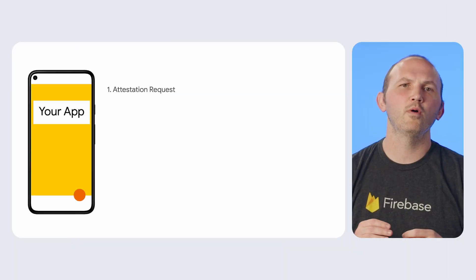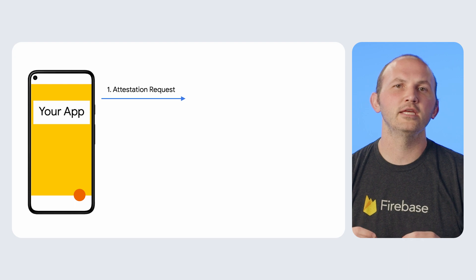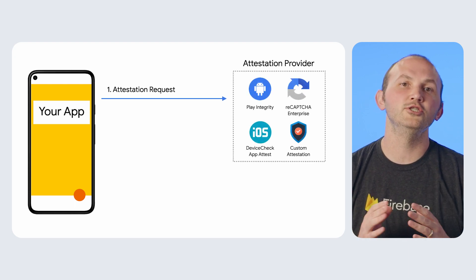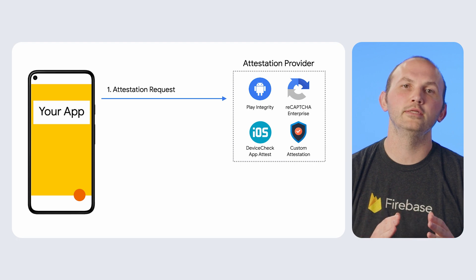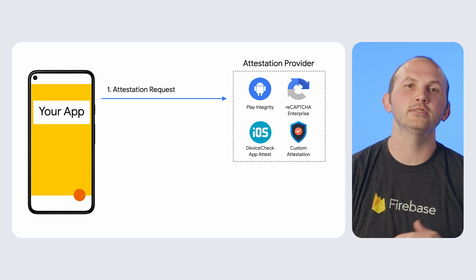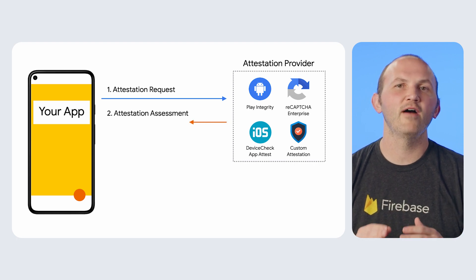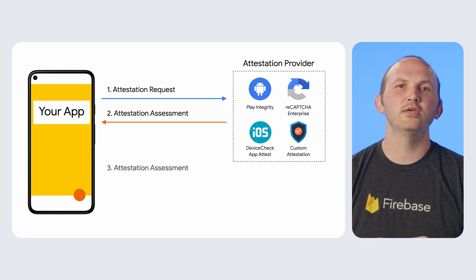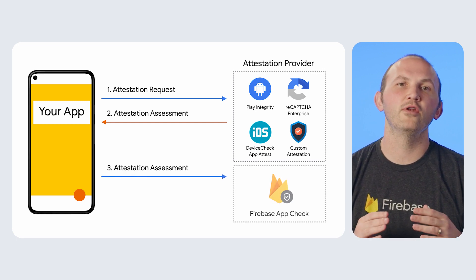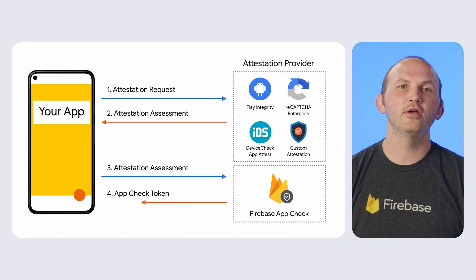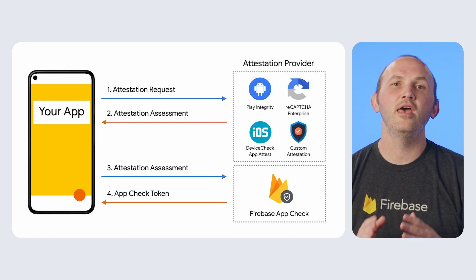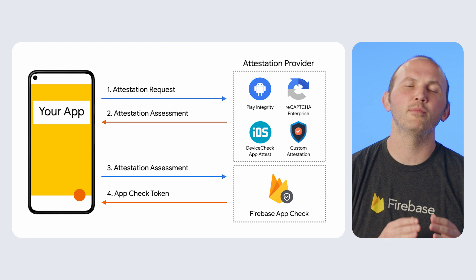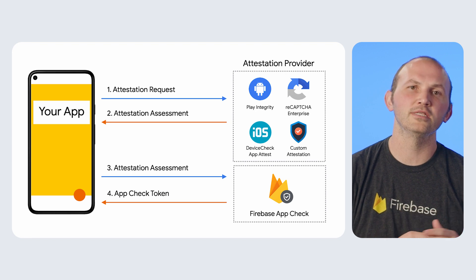Your app makes a request to an attestation provider, which verifies that you are a real user using a genuine app on a real untampered device. The attestation provider will supply an attestation assessment, which can be exchanged with Firebase for an AppCheck token, as long as the assessment is positive and the attestation request didn't occur from a potentially compromised device.